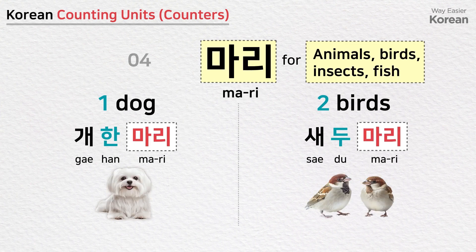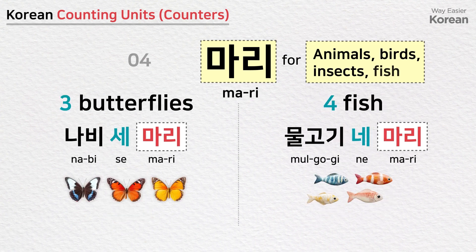마리 is used for counting animals, birds, insects, and fish: one dog — 개 한 마리; two birds — 새 두 마리; three butterflies — 나비 세 마리; four fish — 물고기 네 마리.